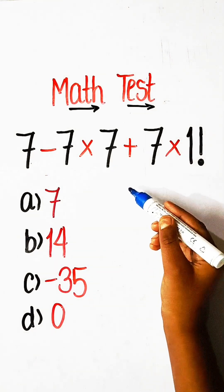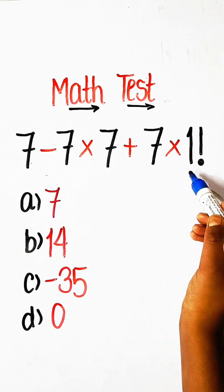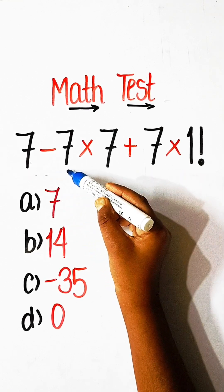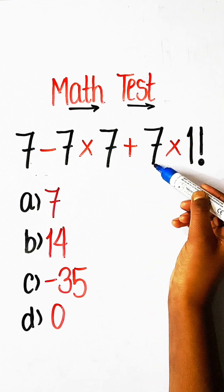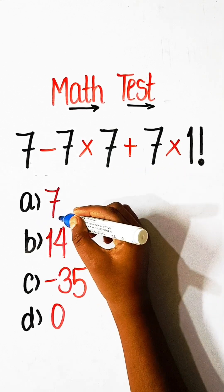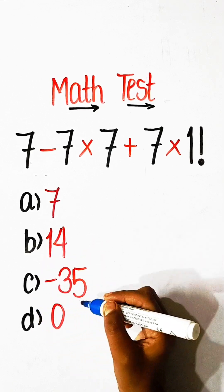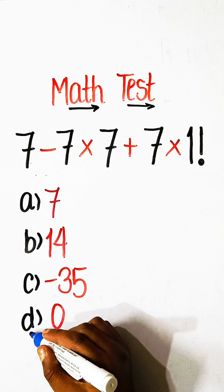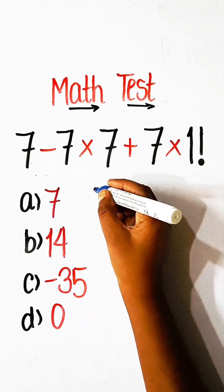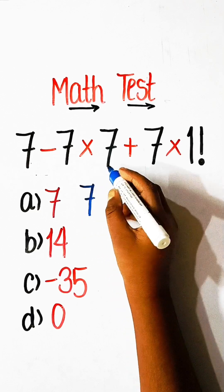Hello everyone, welcome back to my YouTube channel! In this video we will solve this math equation: 7 minus 7 multiplied by 7 plus 7 multiplied by 1 factorial equals what? Option A: 7, Option B: 14, Option C: minus 35, Option D: 0. Let's solve this.